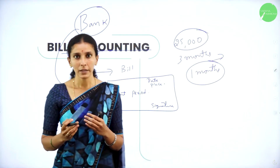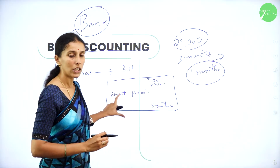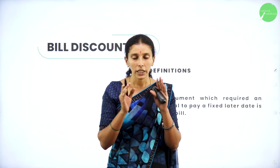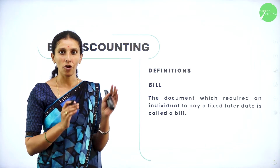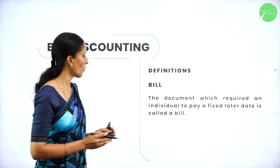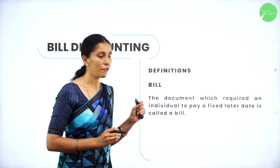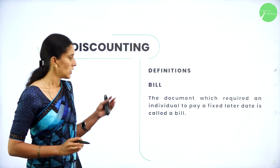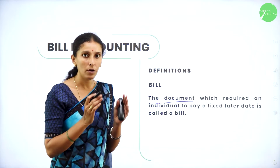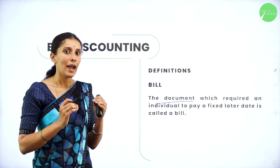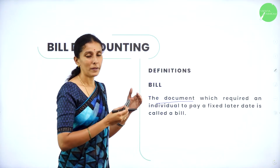So the bank will give you a discount for your amount, and that is your bill discounting. You can pay the money before the period of time stated in the given bill. Now let us see the important terms related to bill discounting and their definitions. The first one is bill: the document which requires an individual to pay a fixed amount at a later date is called a bill. It is a document listing what amount you are going to pay and at what period of time.